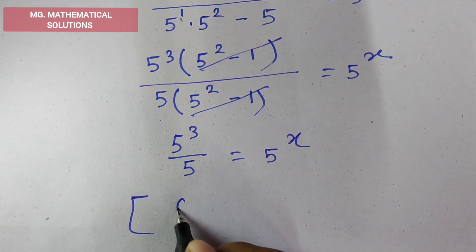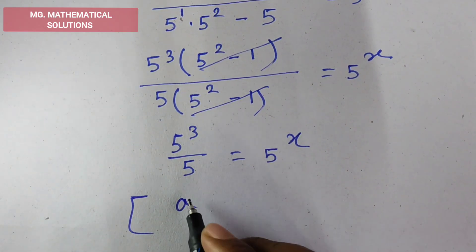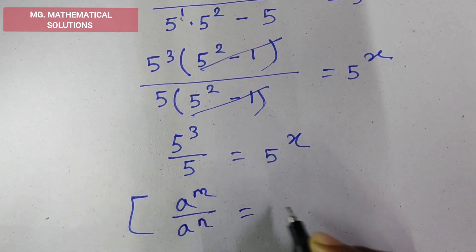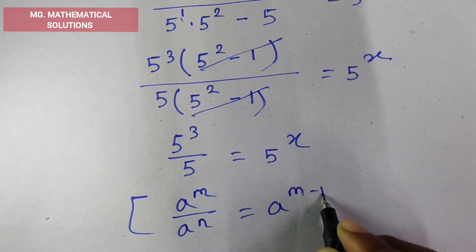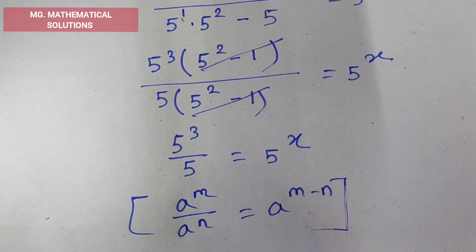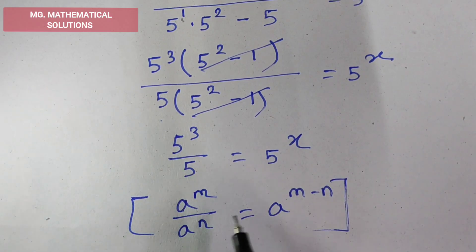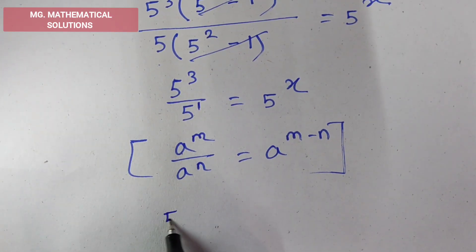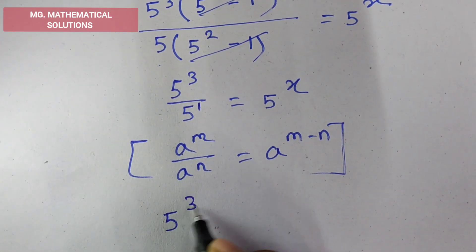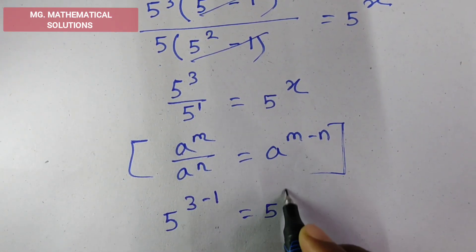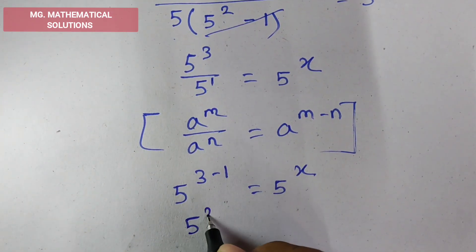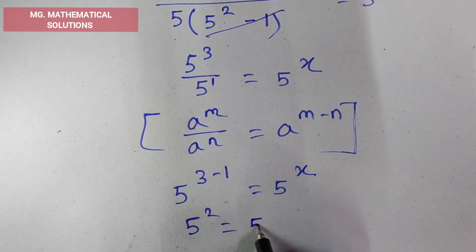Now we use the formula: a to the power m by a to the power n equal to a to the power m minus n. Here a means 5, m means 3 and n means 1. So, 5 to the power 3 minus 1 equal to 5 to the power x. So, 5 square equal to 5 to the power x.